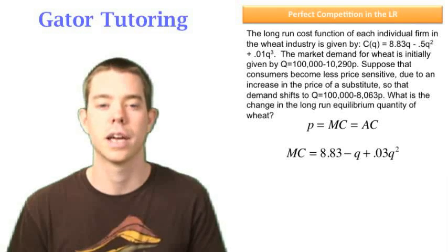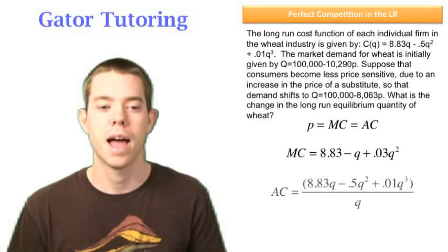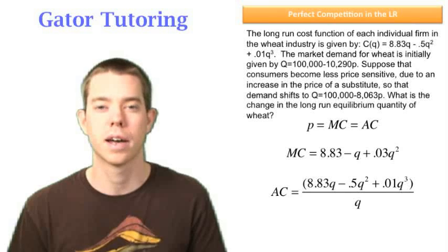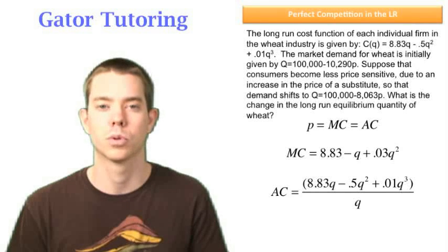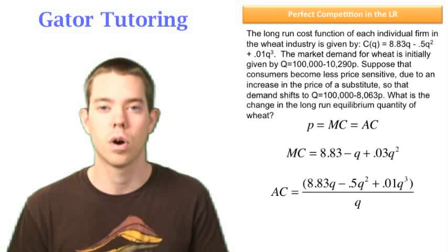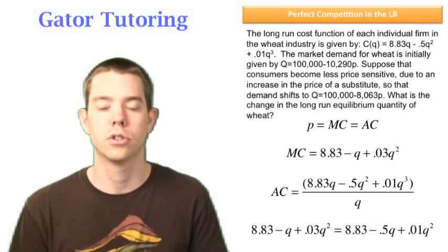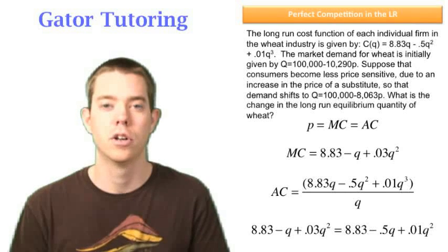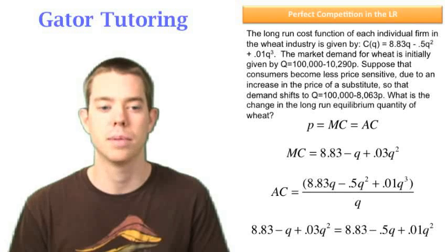We know that marginal cost is 8.83 - q + 0.03q². We know that average cost is just total cost divided by quantity. So we write our total cost function, which was 8.83q - 0.5q² + 0.01q³, and divide that whole thing by quantity. We can set these two equations equal now. Notice that for average cost, the q's are going to cancel, so 8.83 is left, 0.5q² becomes 0.5q, and the 0.01q³ will become 0.01q².